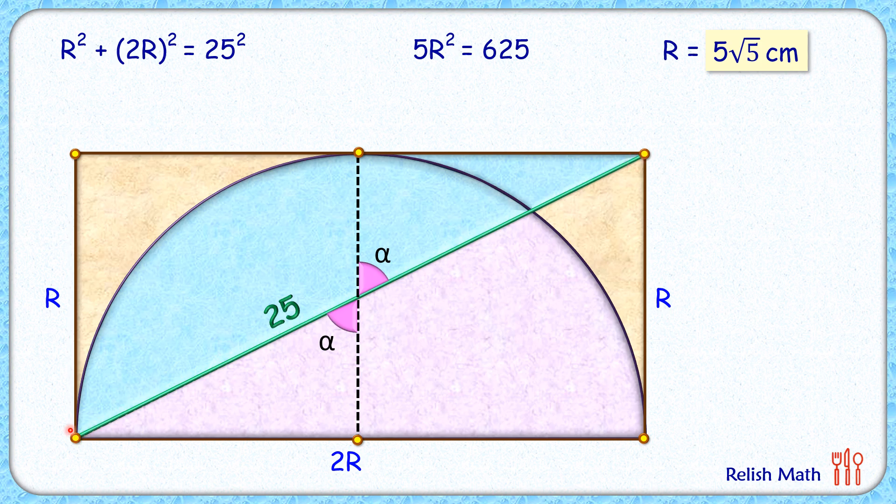This length here is r centimeters, and the point of tangency by symmetry is also the midpoint of length, so this length will also be r centimeters. Thus by angle-angle-side theorem, these two triangles are congruent. As the triangles are congruent, their areas are equal. If this triangle area is A cm², this will also be A cm².